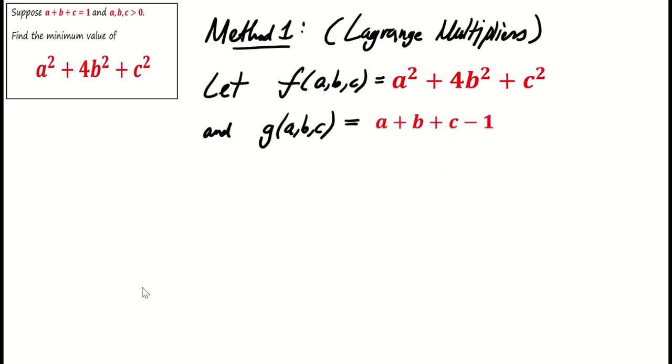The Lagrange multiplier's method helps to find local maxima and minima of a function under such equality constraints. The Lagrange function is L of a, b, c, lambda, which is f minus lambda g, and it equals a square plus 4b square plus c square minus lambda of a plus b plus c minus 1.